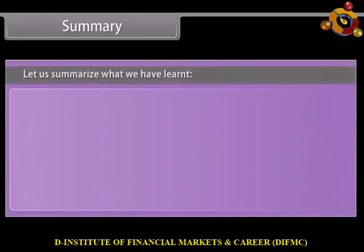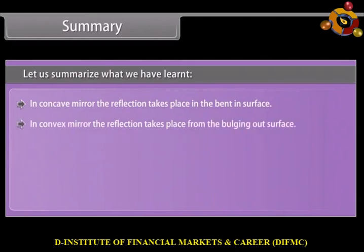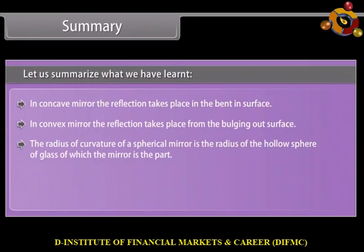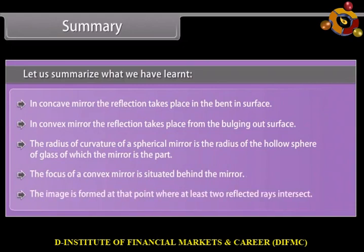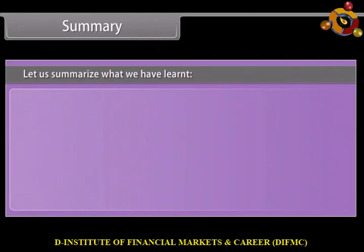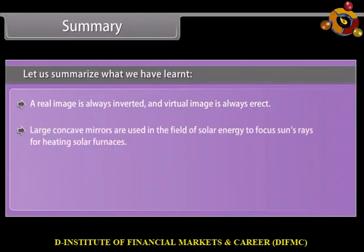Let us summarize what we have learned. In a concave mirror, the reflection takes place at the bent-in surface. In a convex mirror, the reflection takes place from the bulging-out surface. The radius of curvature of a spherical mirror is the radius of the hollow sphere of glass of which the mirror is a part. The focus of a convex mirror is situated behind the mirror. The image is formed at the point where at least two reflected rays intersect. A real image is always inverted and a virtual image is always erect. Large concave mirrors are used in the field of solar energy to focus the sun's rays for heating solar furnaces. The object distance u is always negative in mirrors.